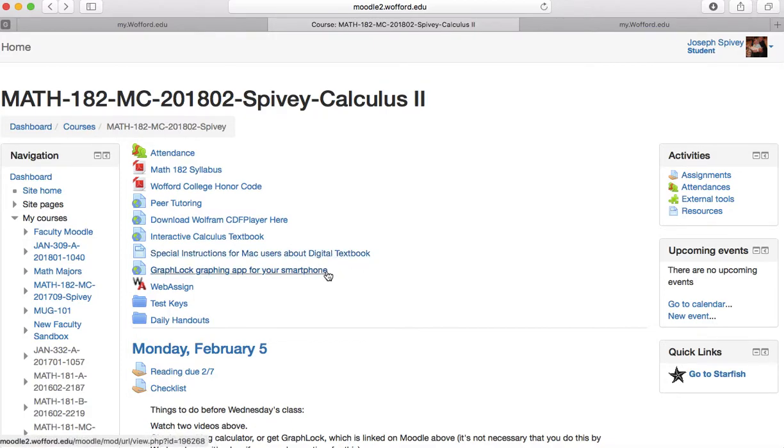The next link is about the GraphLock graphing app. So you can use a graphing calculator for this class. As an alternative, there's this app that you can use called GraphLock. I think it's $5. So if you do not have a graphing calculator that is suitable for this class and you do not want to purchase one, but you have a smartphone, I think the GraphLock graphing app is a good alternative.